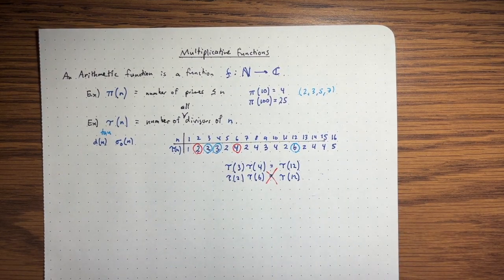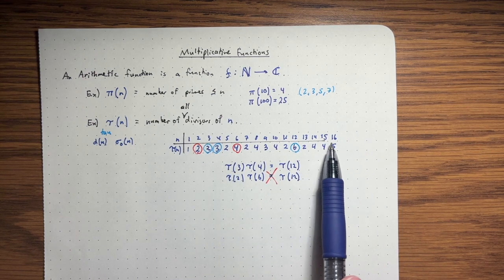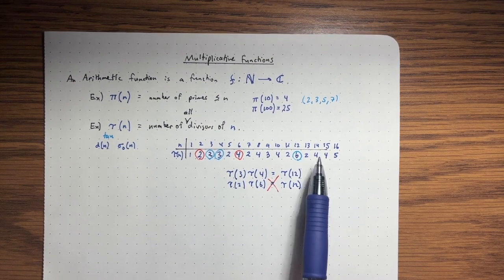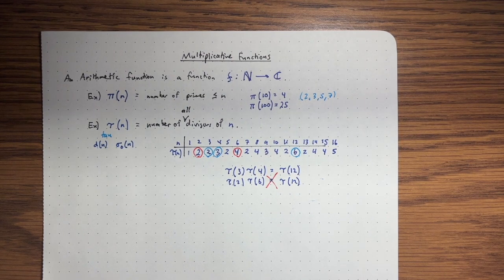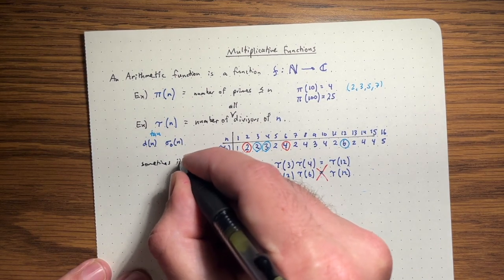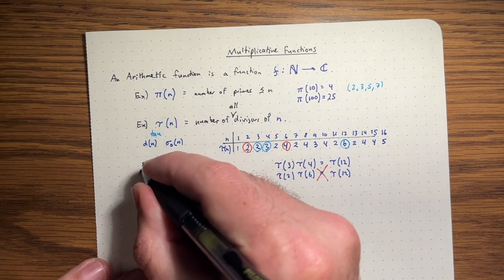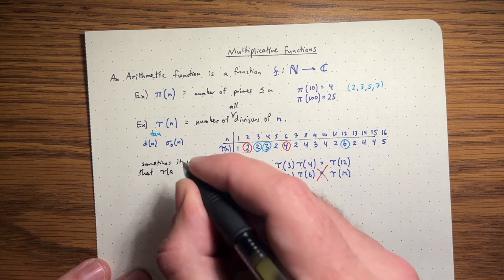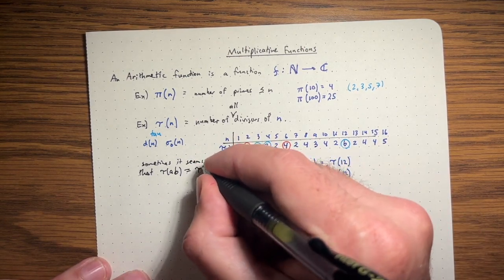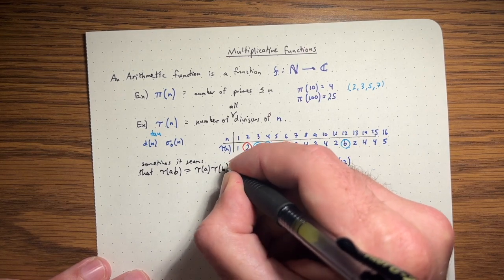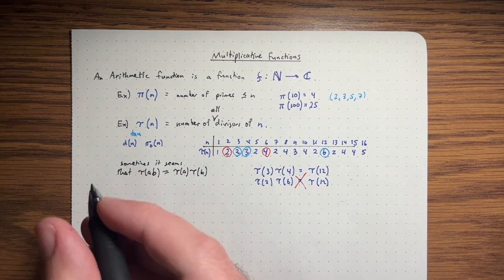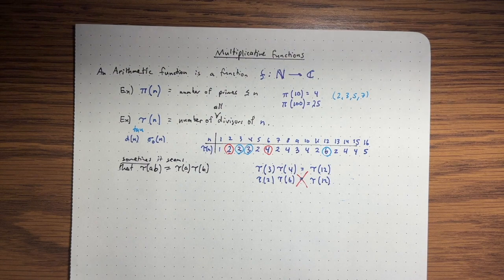You can see this pattern happen a few more times. For example, 15 has 4 divisors, 15 is 3 times 5, and 2 times 2 is 4. So sometimes it seems that tau of a product of two numbers equals tau of a times tau of b — you can multiply the numbers of divisors together. But it's only sometimes; this doesn't always work, so let's figure out exactly when it does.